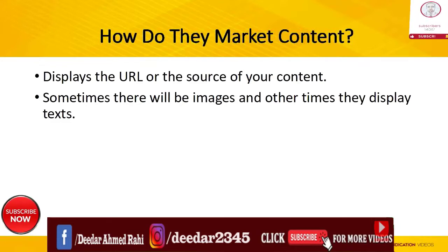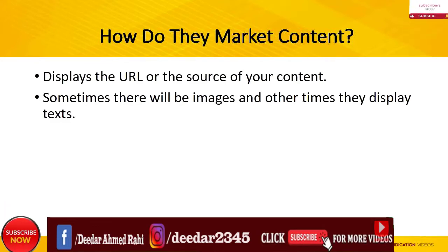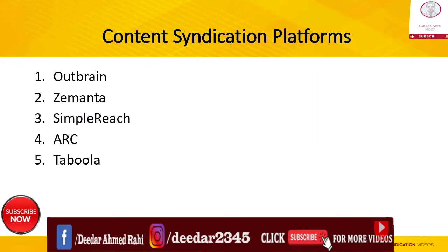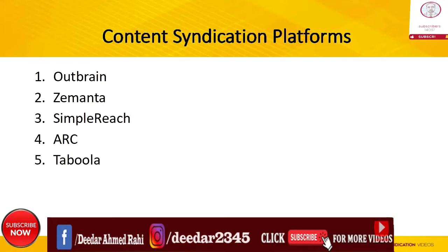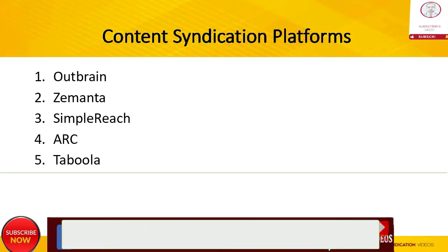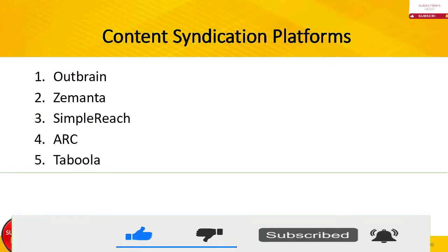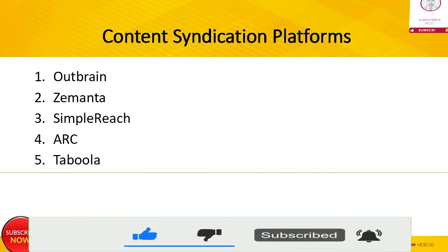There are various content syndication platforms for you to choose from. However, for beginners, I recommend you stick to these five options: 1. Outbrain, 2. Zemanta, 3. Simple Reach, 4. Arc, 5. Taboola.